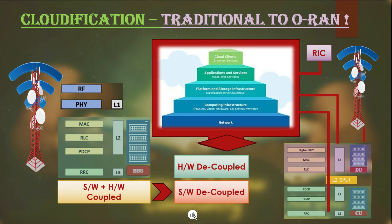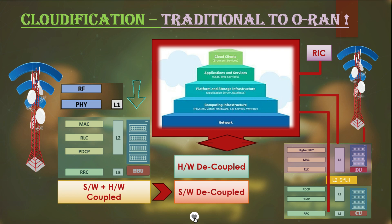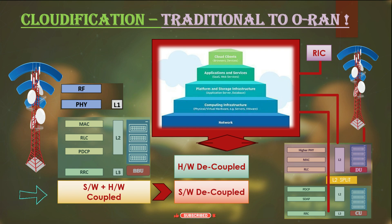On screen you can see the overview of the cloud platform in the OpenRAN network system. On the left is the traditional network system for LTE, showing the Radio Unit at the site connected to the proprietary BBU — Baseband Unit — through the conventional fronthaul interface called CPRI. All layer functionalities of the OSI model from L1 to L3 are handled by the Baseband Unit.